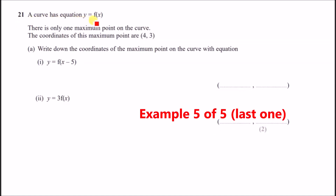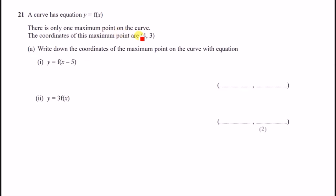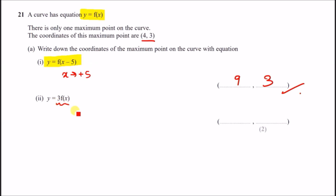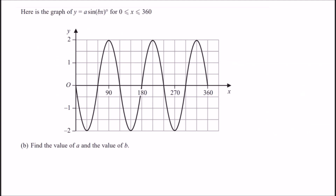The maximum point of y = f(x) is (4, 3). For the transformation y = f(x − 5): x − 5 inside shifts x by +5, so the maximum becomes (4 + 5, 3) = (9, 3). For y = 3f(x): the 3 outside multiplies all y-coordinates by 3, so the maximum becomes (4, 3 × 3) = (4, 9).